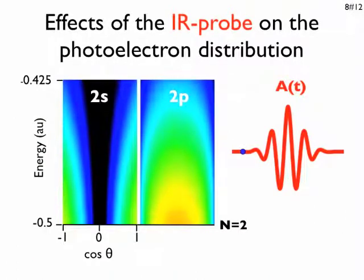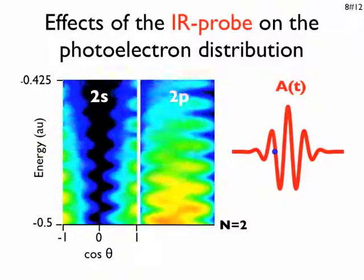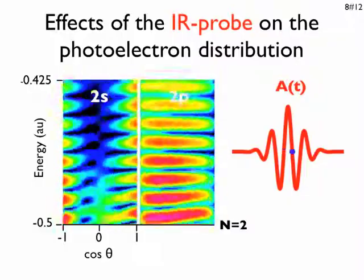Let us see what happens in the two S and two P channels when, after a certain time delay, the IR probe knocks on the atom. From the direct ionization amplitude due to the pump pulse, a complicated interference pattern emerges.